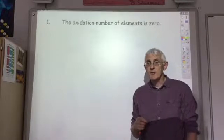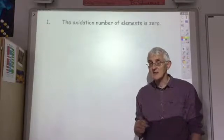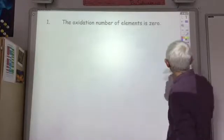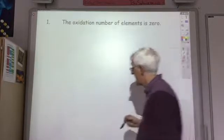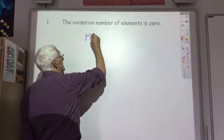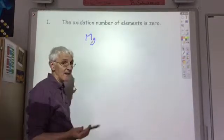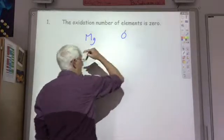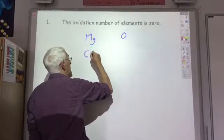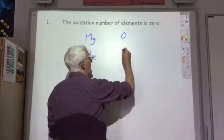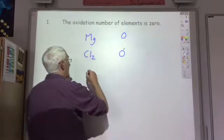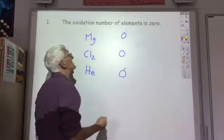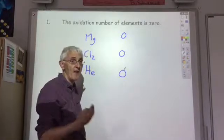The first rule is that the oxidation state of an element is zero. So for example, magnesium metal has an oxidation state of zero. If you have chlorine gas, the oxidation state of the chlorine is zero. If you've got helium, the oxidation state is also zero. So the oxidation number of an element in its elemental form is zero.